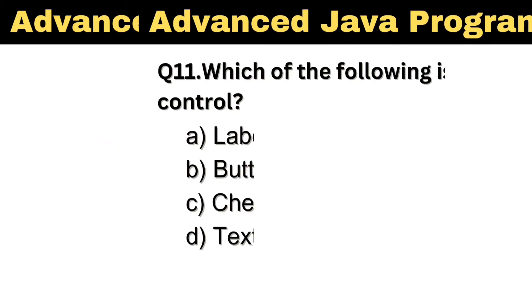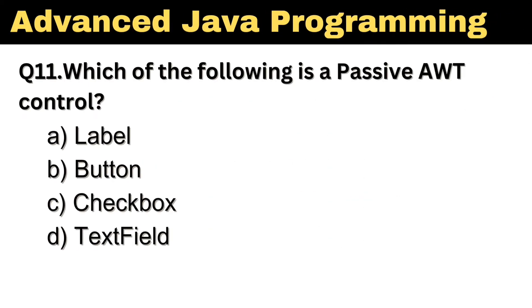Question number 11. Which of the following is a passive AWT control? The right answer is option A: Label.